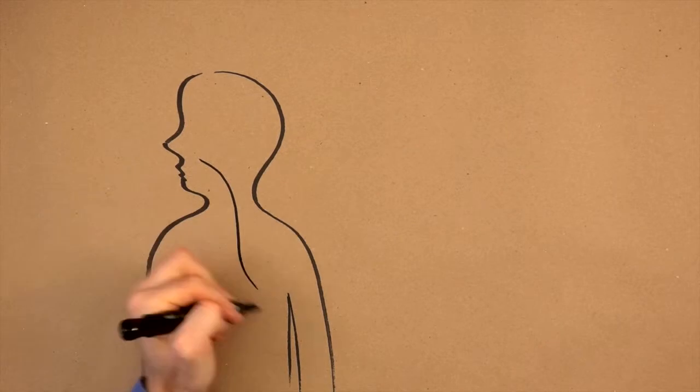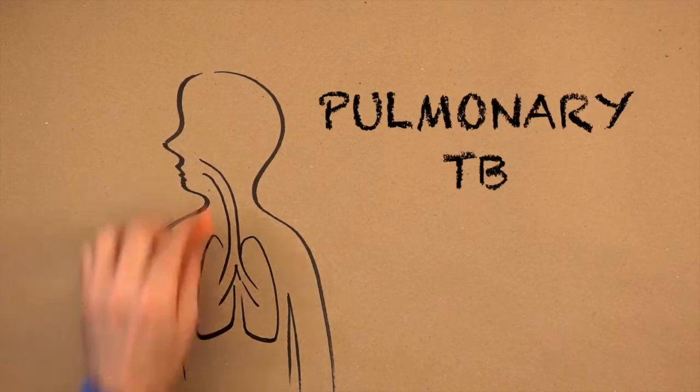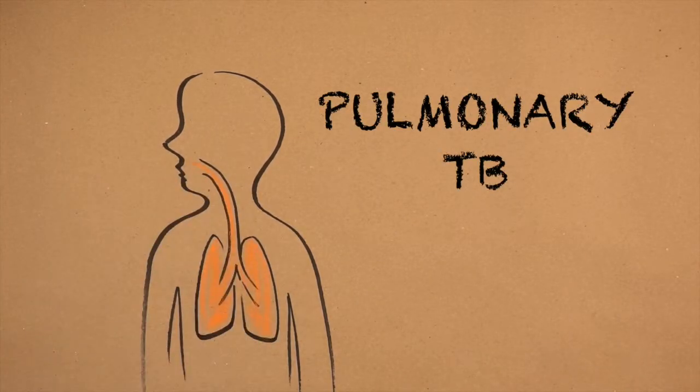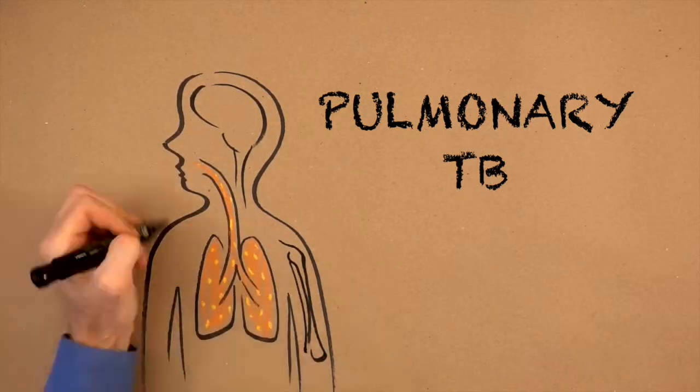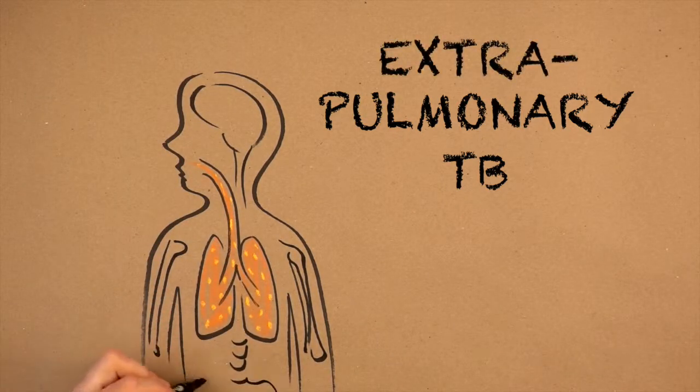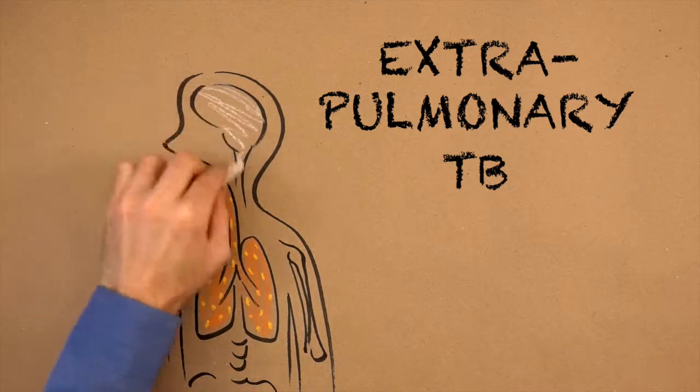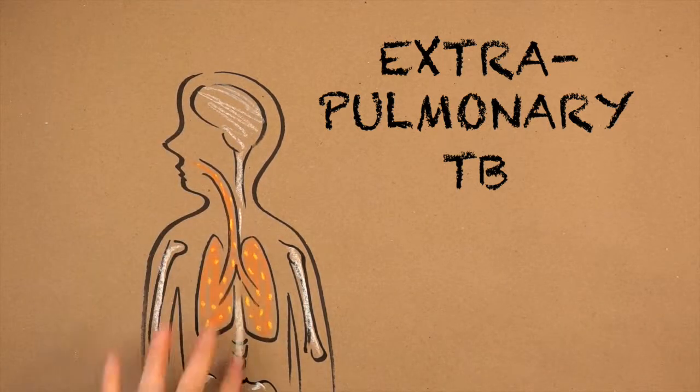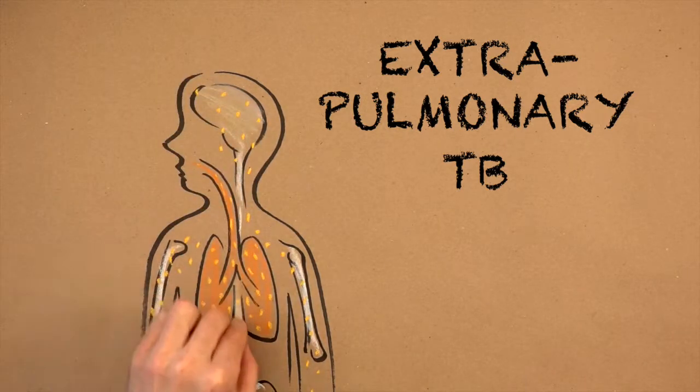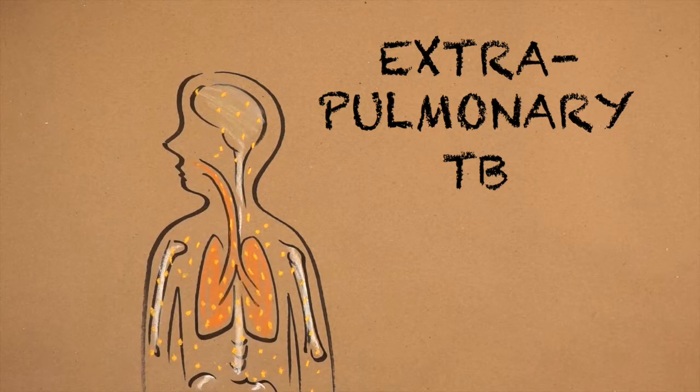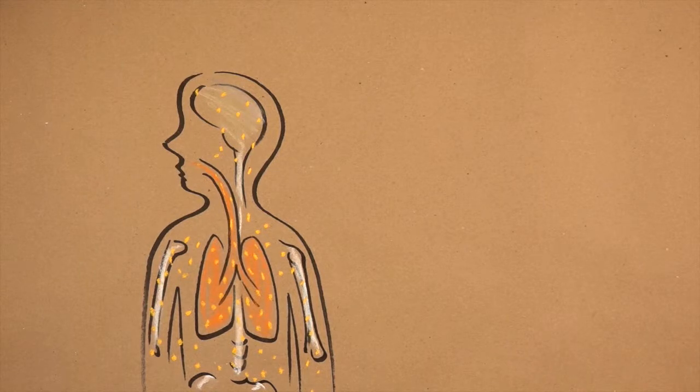TB infects your lungs which scientists call pulmonary tuberculosis, but the bacteria can also be spread to other parts of your body like your brain or bones. This is called extra pulmonary TB. It can be harder to cure and more life threatening than TB in the lungs. Kids are more likely than adults to get TB in other parts of our bodies besides our lungs.